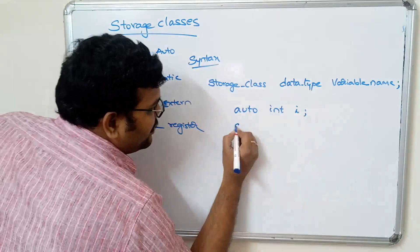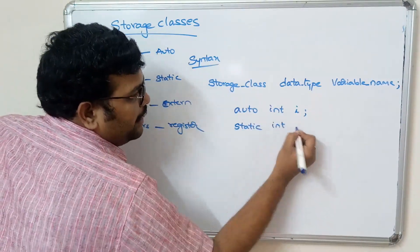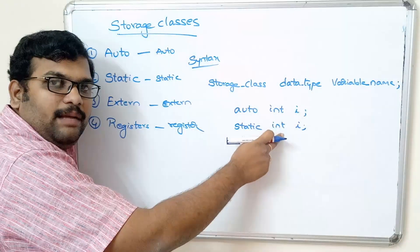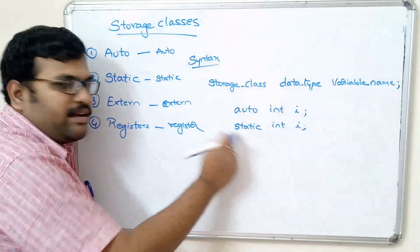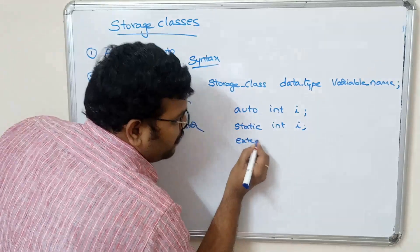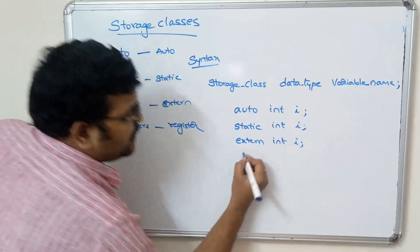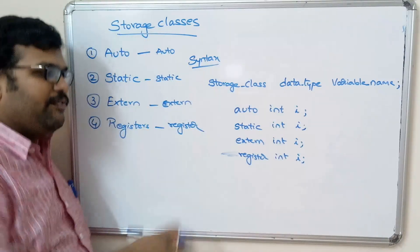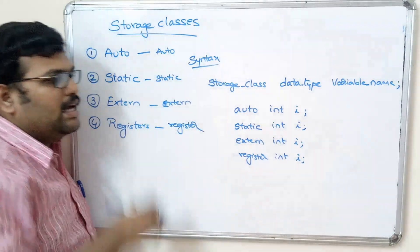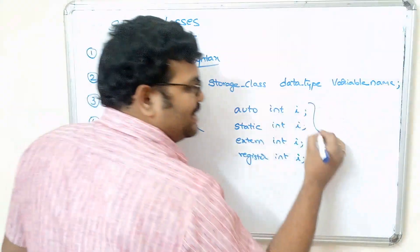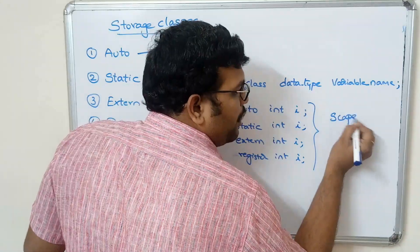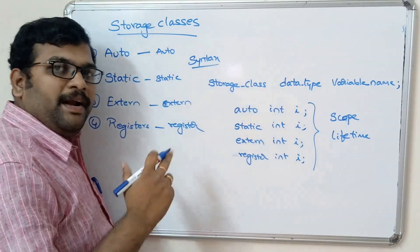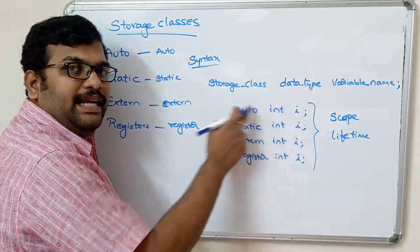For static you write static int i, which means variable i is an integer with storage class static. For external you write extern int i. For register you write register int i. The main difference between all four storage classes is the scope and lifetime of the variable, which changes for each storage class.